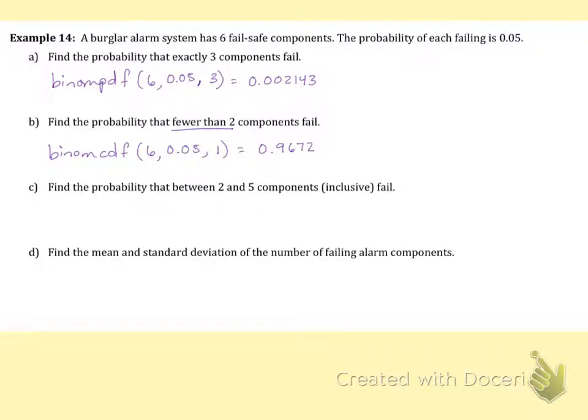Then it says find the probability that between two and five components, inclusive, fail. And in the solutions manual for this packet, this problem is actually wrong. So I'm going to show you how to do it correctly.